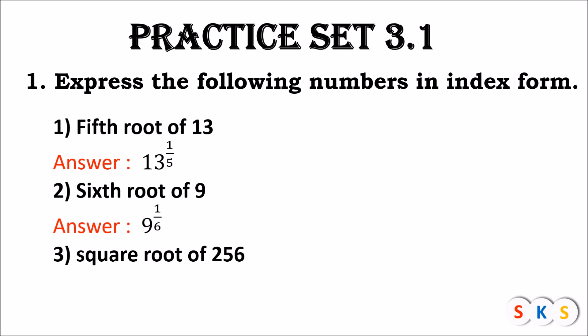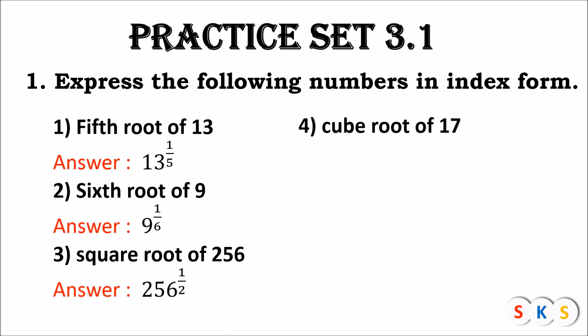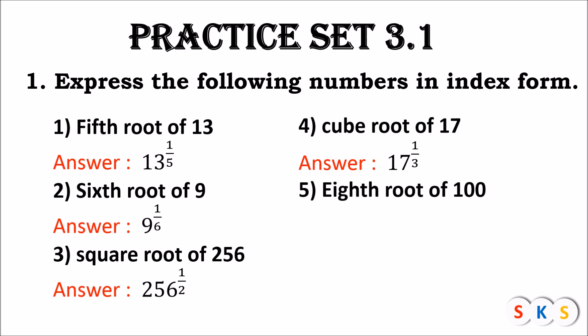The square root of 256 can be written as 256 raised to 1 upon 2, since square root means the denominator is 2. The cube root of 7 means the third root, so it is 7 raised to 1 upon 3. For the cube root of 17, the denominator is 3 and the numerator remains 1, so we write this as 17 raised to 1 upon 3. The eighth root of 100 can be written as 100 raised to 1 upon 8.